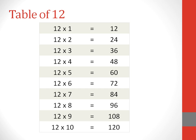Table of 12. 12 ones are 12. 12 twos are 24. 12 threes are 36. 12 fours are 48. 12 fives are 60.